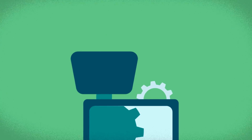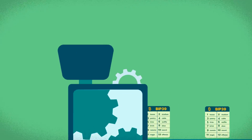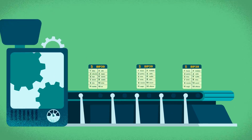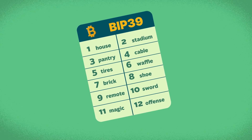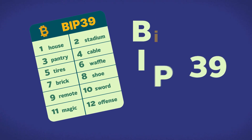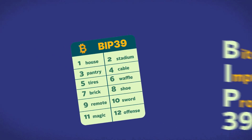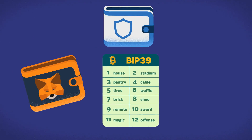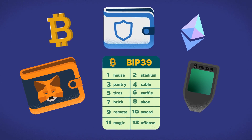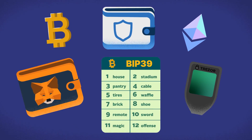Seed phrases are generated following a standard that defines the format used for wallet backup and recovery. The most widely used standard currently is BIP39, which stands for Bitcoin Improvement Proposal 39. Although originally proposed for Bitcoin wallets, its adoption has extended beyond Bitcoin and is pretty much used by all wallets today.